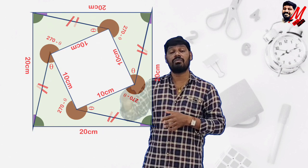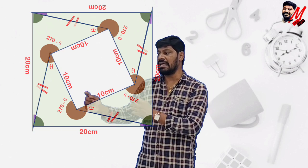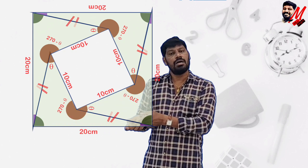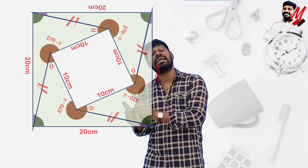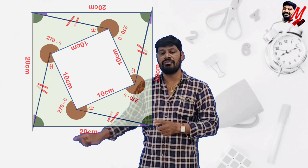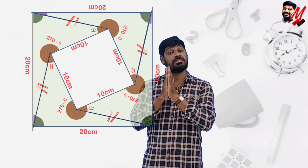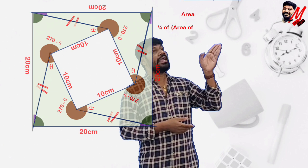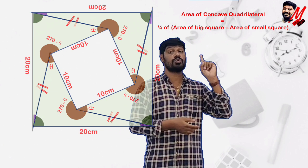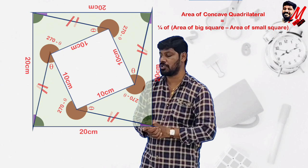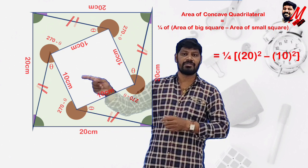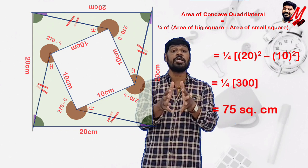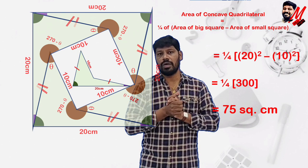You might wonder how we know the outer shape is a square. Since the sum of the two base angles equals 90°, when we place the rotated copies, the complementary angles combine to make each corner exactly 90°, confirming the larger figure is a square with side 20, and the empty inner space is also a square with side 10. Therefore, the area of the concave quadrilateral equals one-fourth of (20² − 10²) = one-fourth of (400 − 100) = one-fourth of 300 = 75 cm².